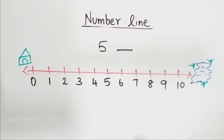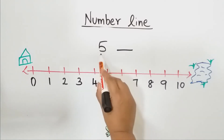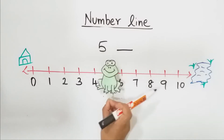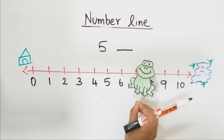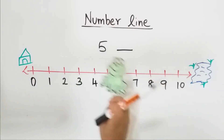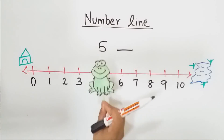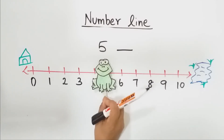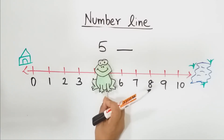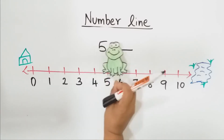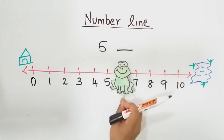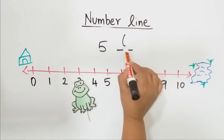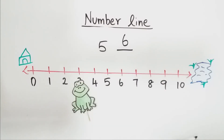So children, can you tell me which is the after number of five? After number means it is the next number. So shall we keep this froggy in five? Now tell me which is the after number of five. It has to jump forward. So it is number six. Very good children, it is number six.